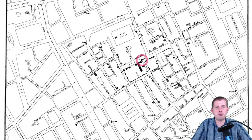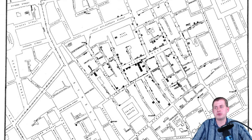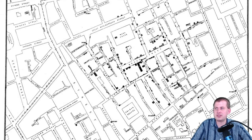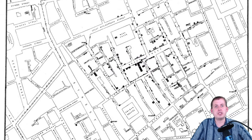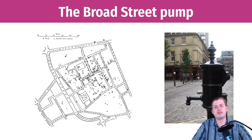If you notice, most of the deaths happened right here in one specific area. And if you look carefully, there's a big dot that says 'pump' — that was the main water pump for the neighborhood. People went down there, filled up their giant buckets of water, and took them home. There wasn't running water, so everything was based on that pump. Through interviews and early 'shoe leather epidemiology,' he discovered that all the people getting sick and dying of cholera used that pump.